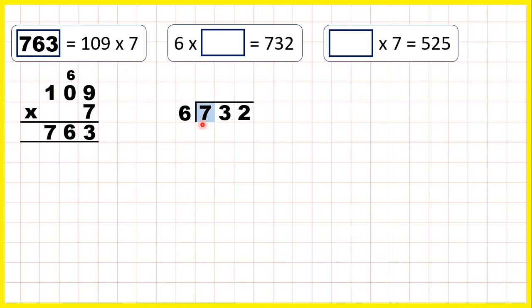Using short division, 7 divided by 6 is 1, remainder 1, because 1 times 6 is 6, then we need 1 more to get to 7. Now 13 divided by 6 is 2, remainder 1, because 2 times 6 is 12, but then we need 1 more to get to 13. And finally, 12 divided by 6 is 2.